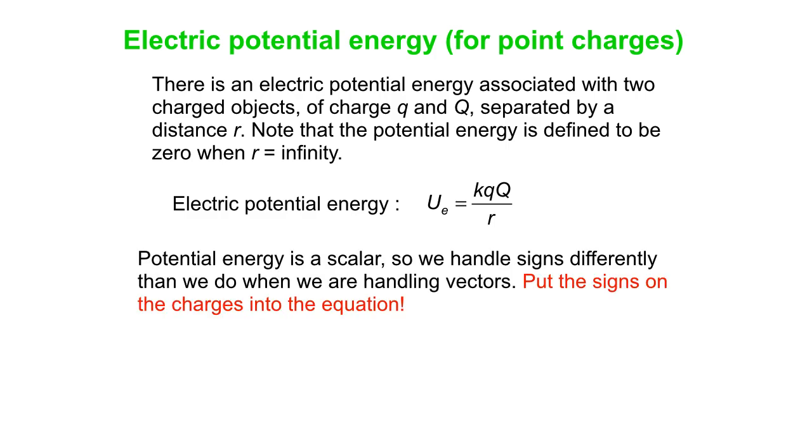So again, potential energy is a scalar, so we do handle the signs very differently. Our advice about Coulomb's law was to let the picture get you the direction, and just let Coulomb's law get you the equation, get you the magnitude. But for this equation, throw the signs right in there. Whatever the signs are, put them in. Ue can be positive or negative.